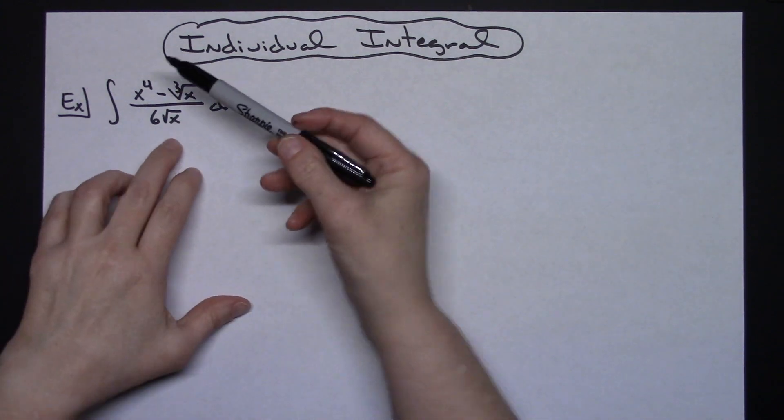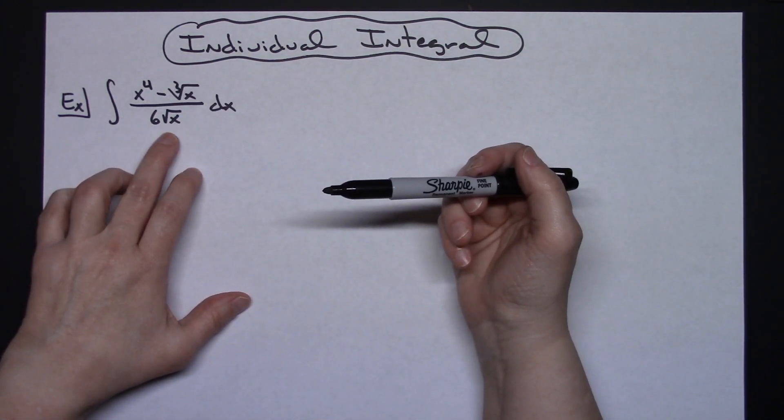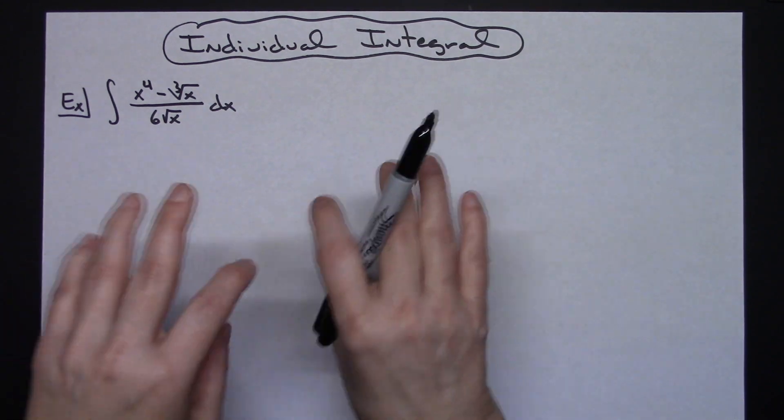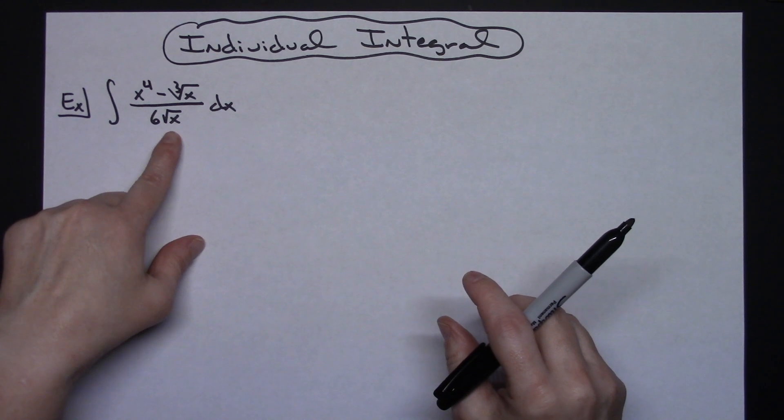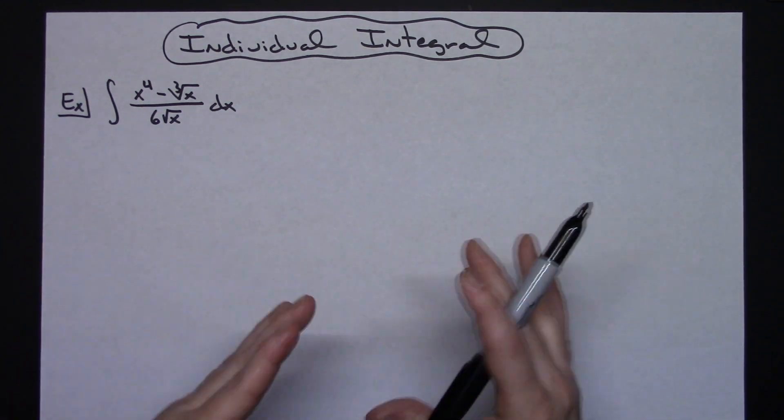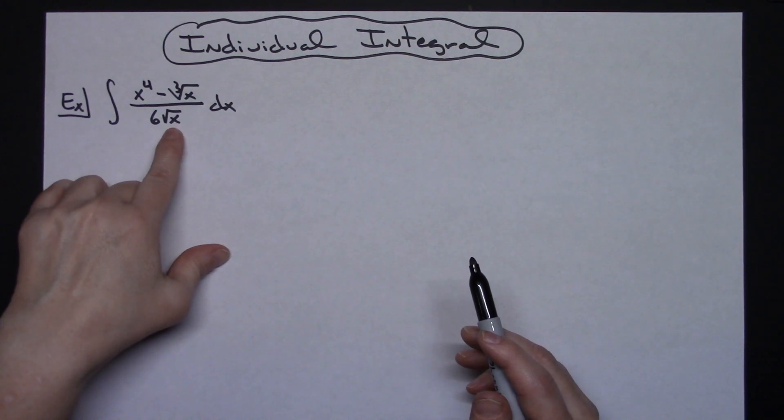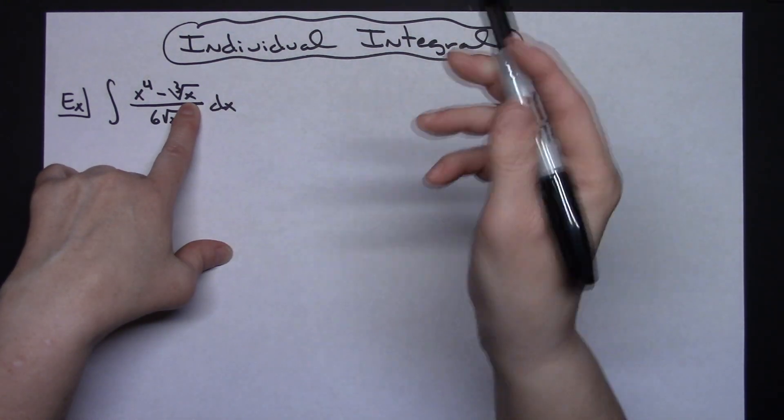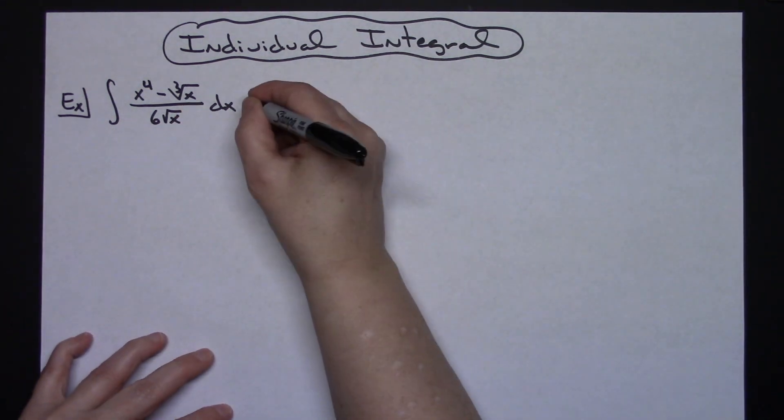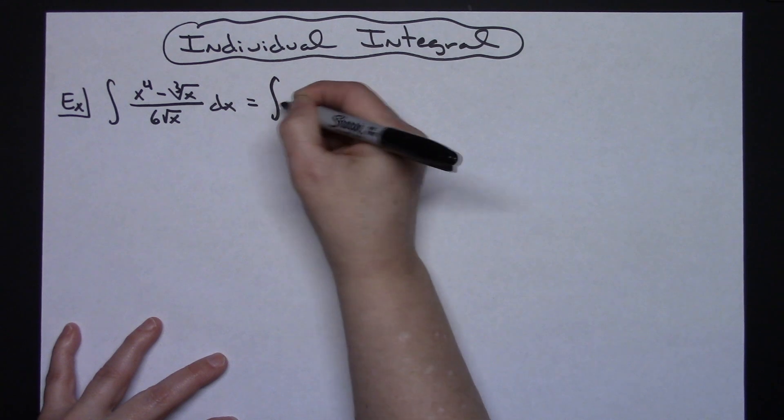What I'm going to need to do is notice that I've got a subtraction in the numerator and just a single denominator. If I break this up into two separate integrals, I can work them out separately and apply some laws of exponents. I can turn this square root into x to the one-half and turn this cube root into x to the one-third. That's going to be my first step—break it into two individual integrals and make those changes algebraically.